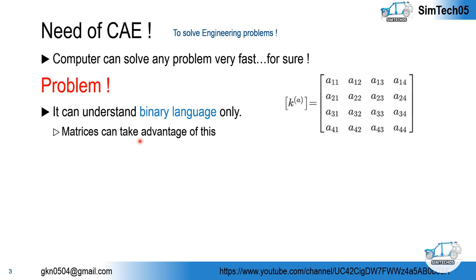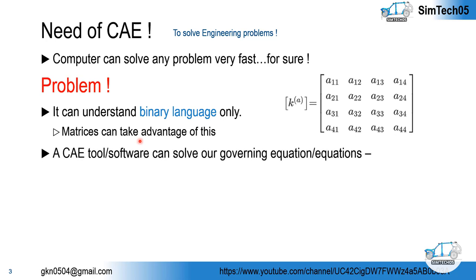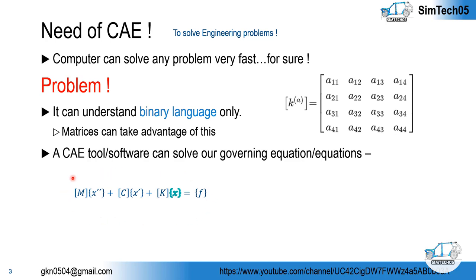This stiffness may be a function of material, structure, size, and shape. So once we convert our governing equation into the form of matrices, then our CAE tool with the help of a computer can solve our governing equations very easily. In mathematics, these governing equations may look like: m̈x + cẋ + kx = F(t), where m, c, and k are represented as matrices and x as a vector.